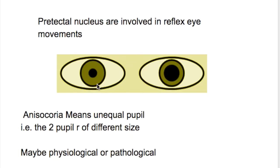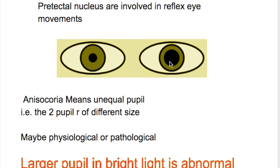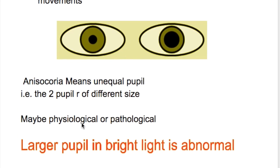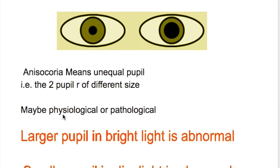In this video we'll discuss anisocoria. Anisocoria means unequal pupils, that is the two pupils are of different sizes - one pupil is small and the other is large. The causes of anisocoria may be physiological or pathological. Physiological anisocoria is common and present in a number of people.